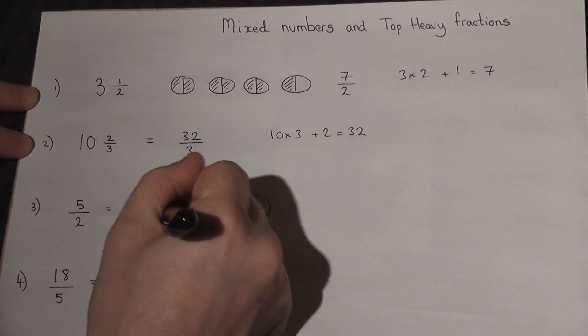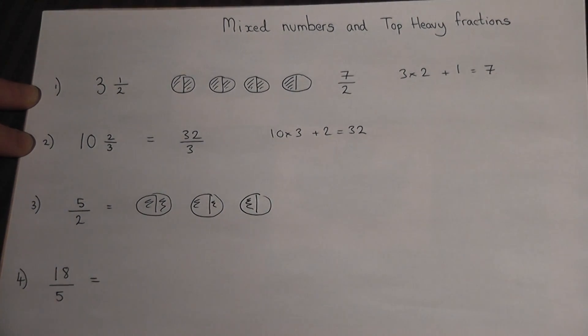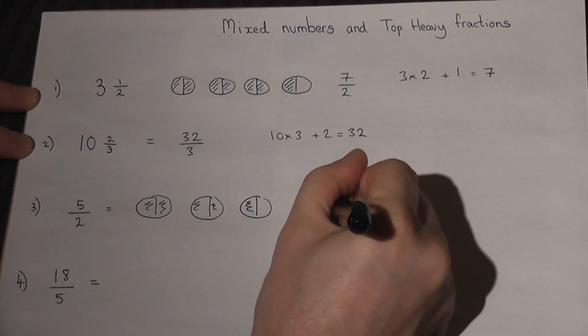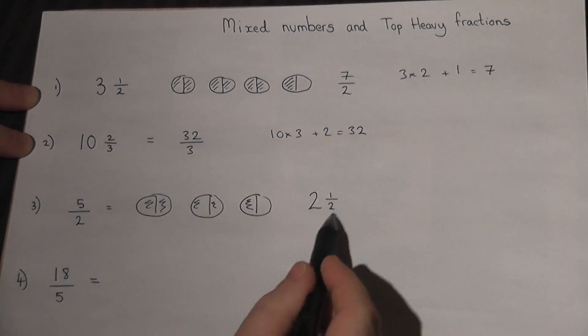Counting them: one, two, three, four, five halves. We can therefore see that this is the same as two whole ones plus an extra half. So five halves is the same as two and a half.